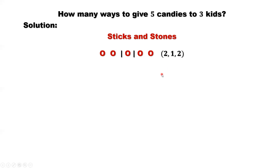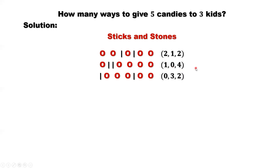Let's look at a different solution. The first group means the first kid has one candy. The second group — we don't have any candy inside — means the second kid got zero candy. The third kid got four candies. In another solution, on the left-hand side of the first stick there's nothing, so the first kid got nothing. The second kid got three, and the last one got two.